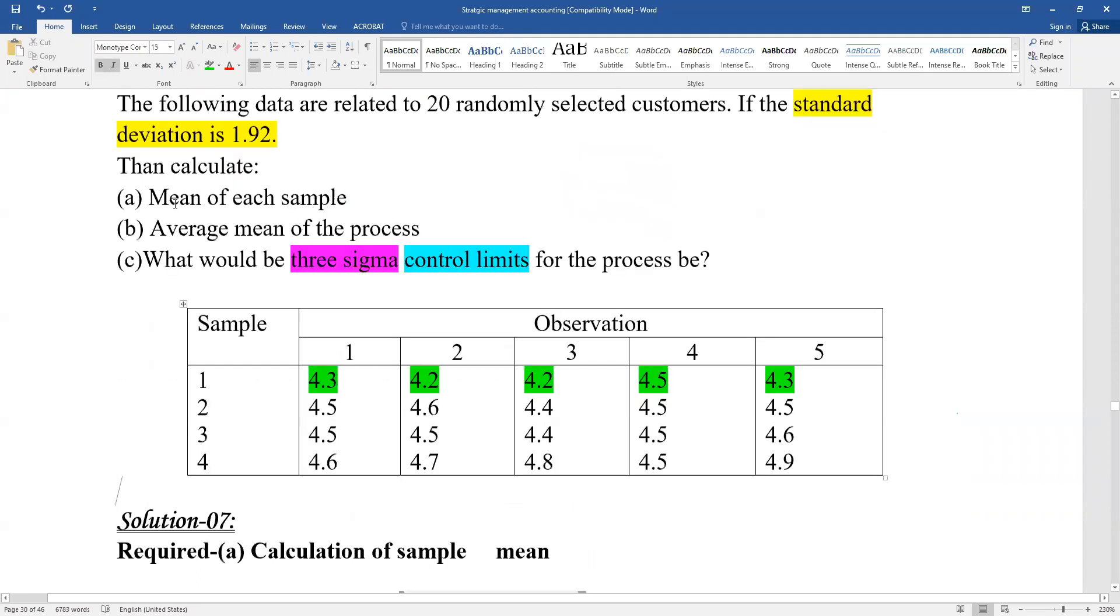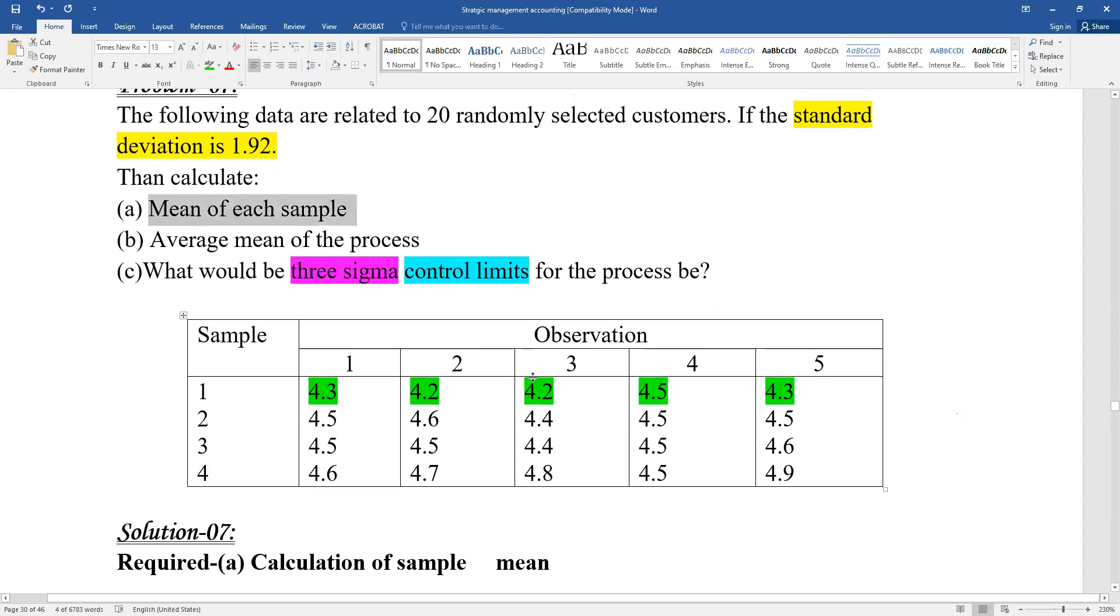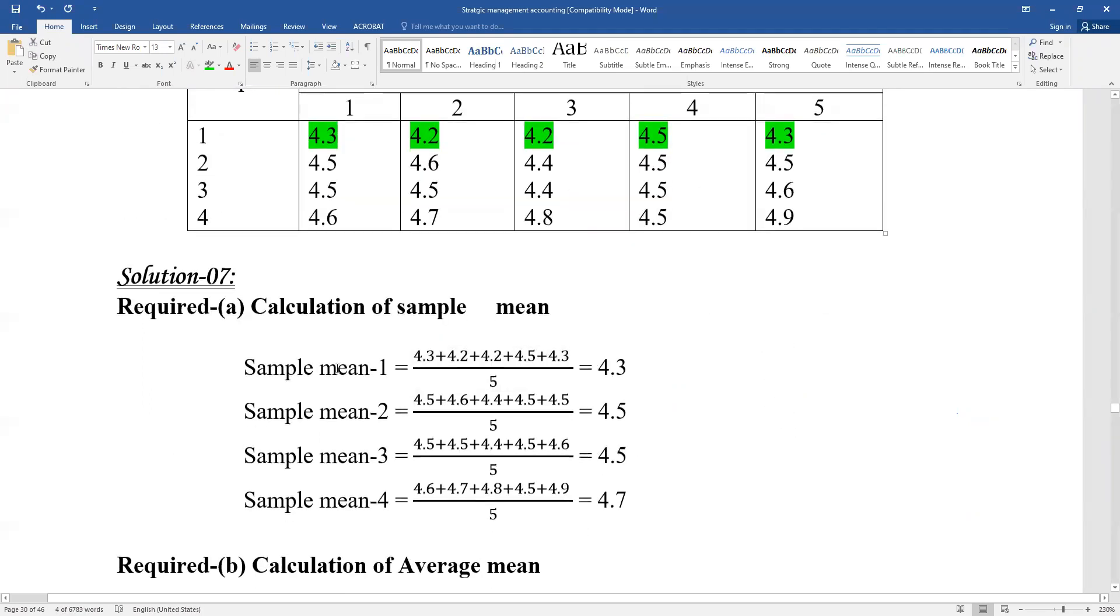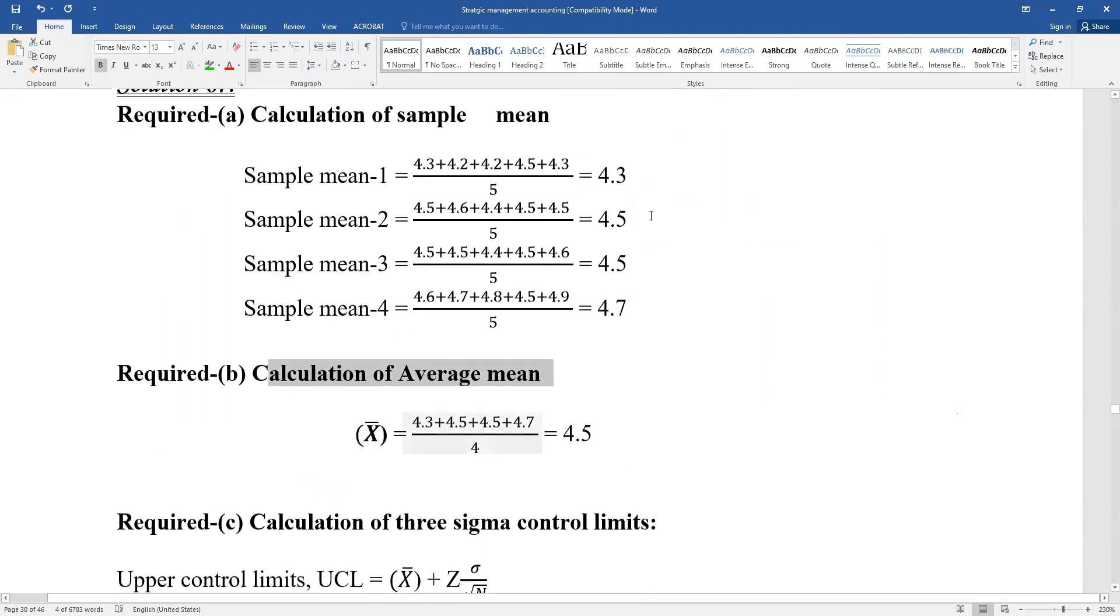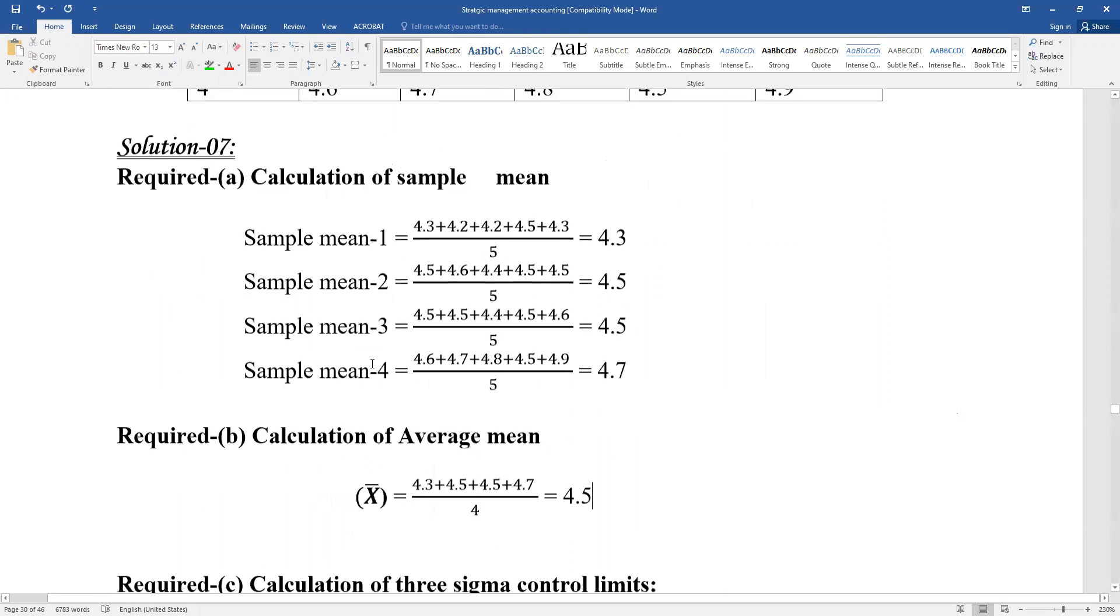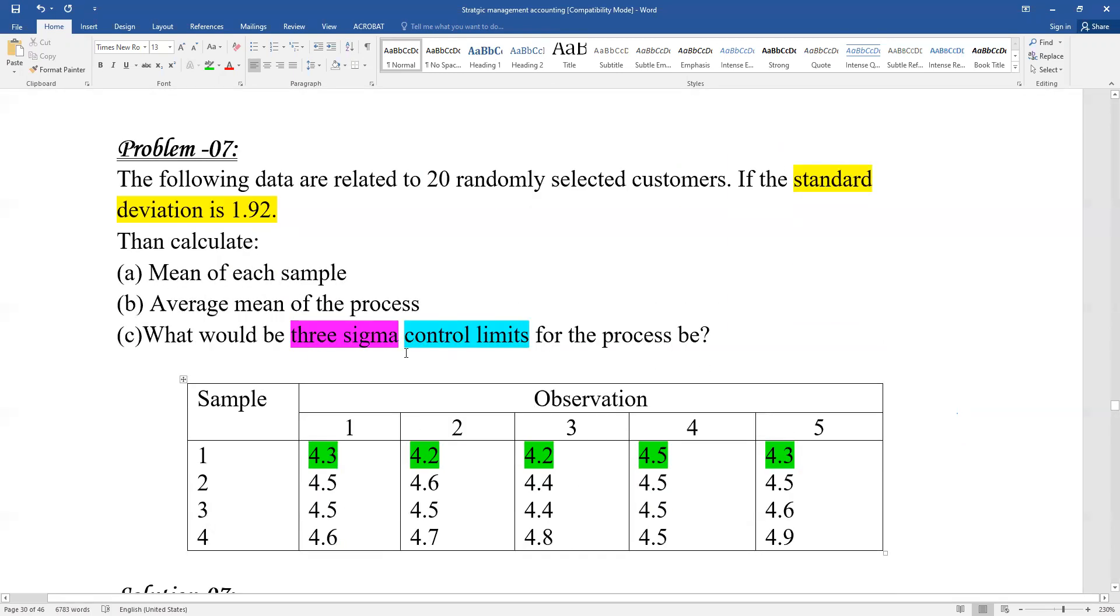Calculate sample mean - the mean of each sample. Average mean of the process - the process average is calculated from all the sample means. To calculate the average mean, which is X-bar, we take all the sample means and find their average.